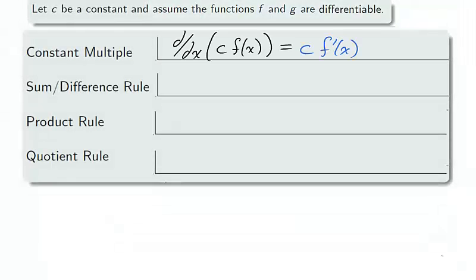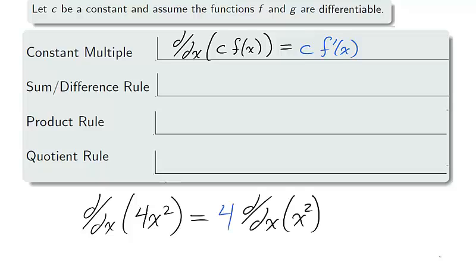The constant multiple rule says that a derivative can occur either before or after a constant is multiplied. Take for example the derivative of 4x squared. We know the derivative of x squared exists, so the 4 factors out before we take the derivative. And using our power rule, we find that the derivative of 4x squared is 8x.